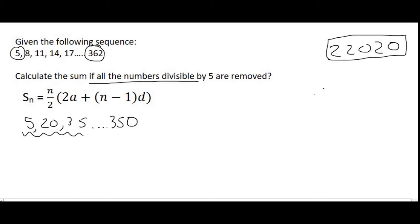So, then what we can use is the term formula for arithmetic to work out how many terms we have in that pattern over there. Where the last term is 350, a is going to be 5. Remember, we're not looking at the original sequence anymore. We're just looking at this one.